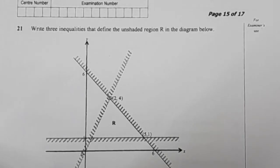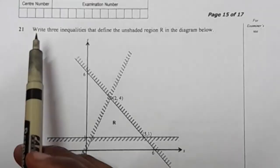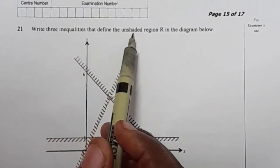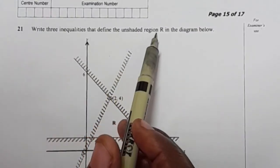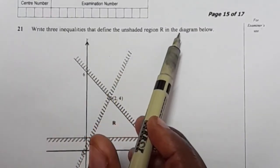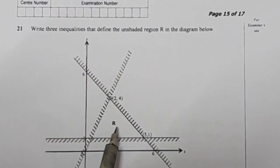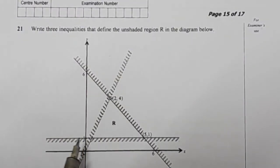Have you been struggling on how to solve linear programming paper 1 questions? Then this video is for you. We have this question here: write three inequalities that define the unshaded region R in the diagram below. So this is the region that you are asked to find the three inequalities for.